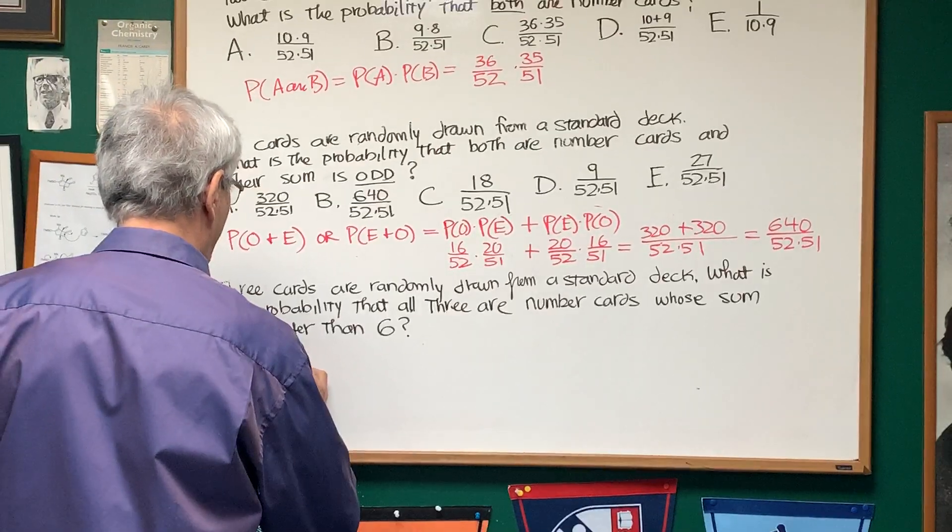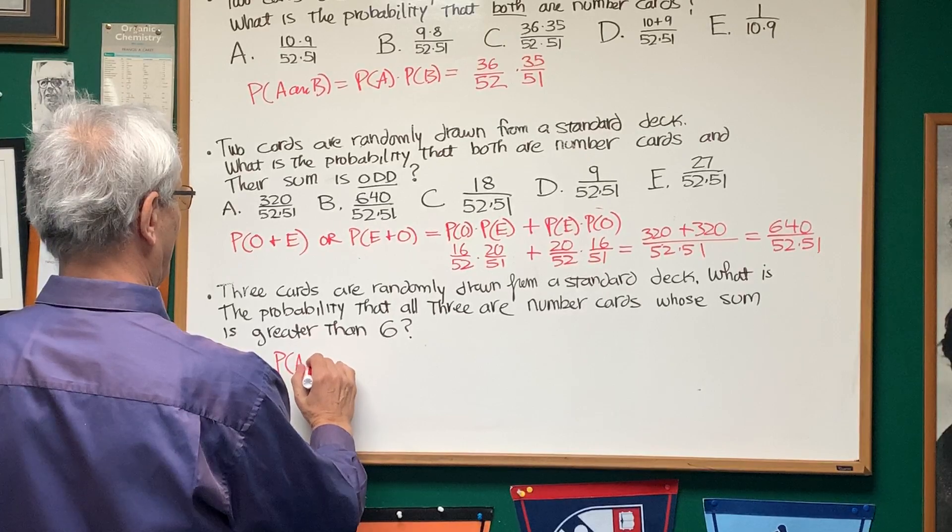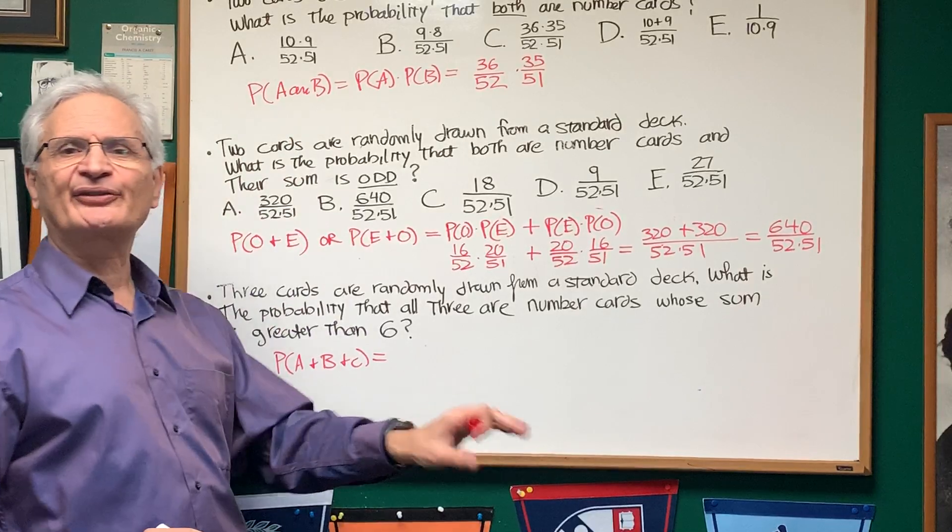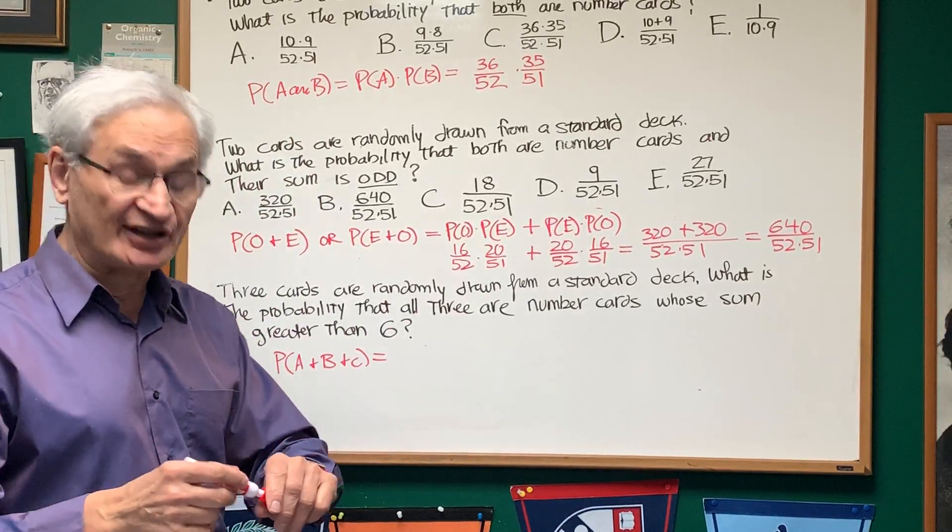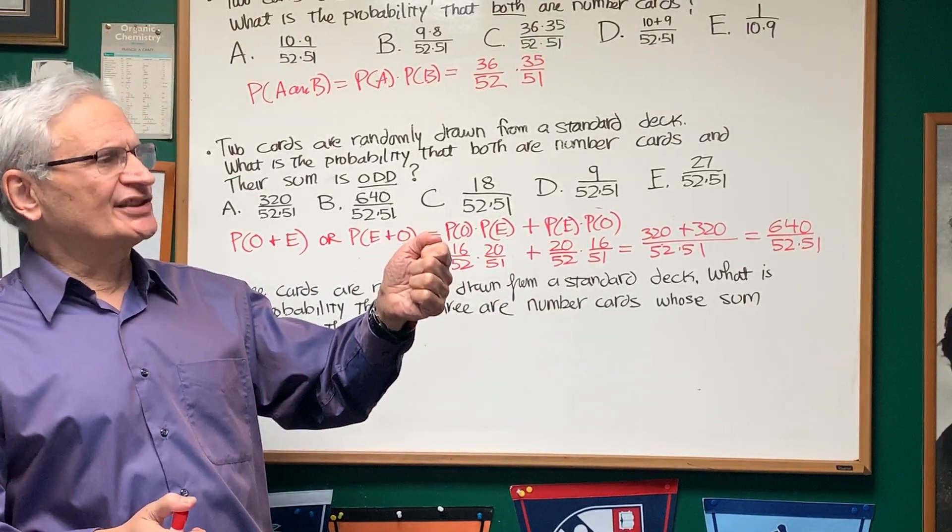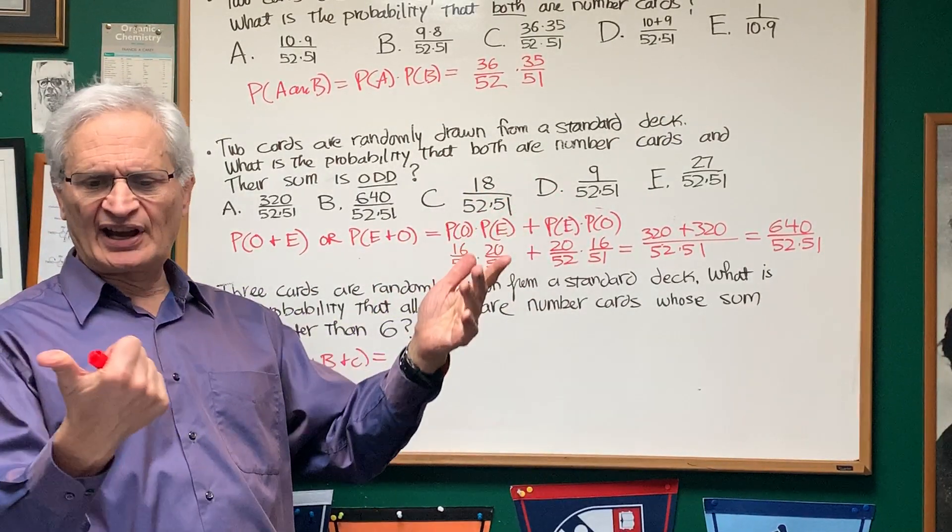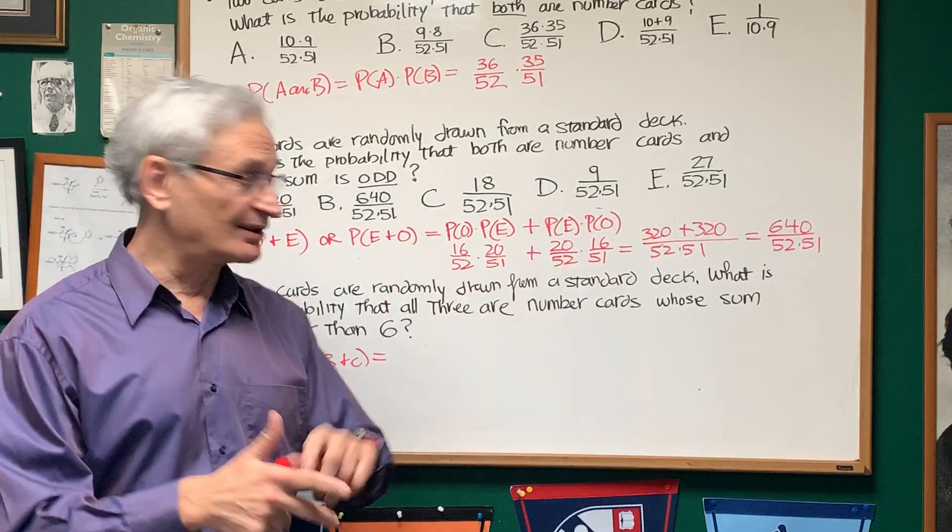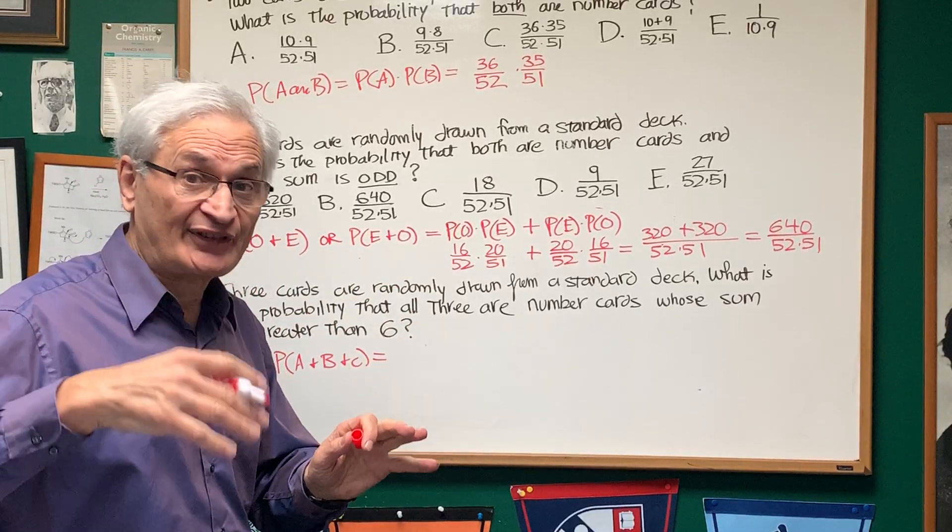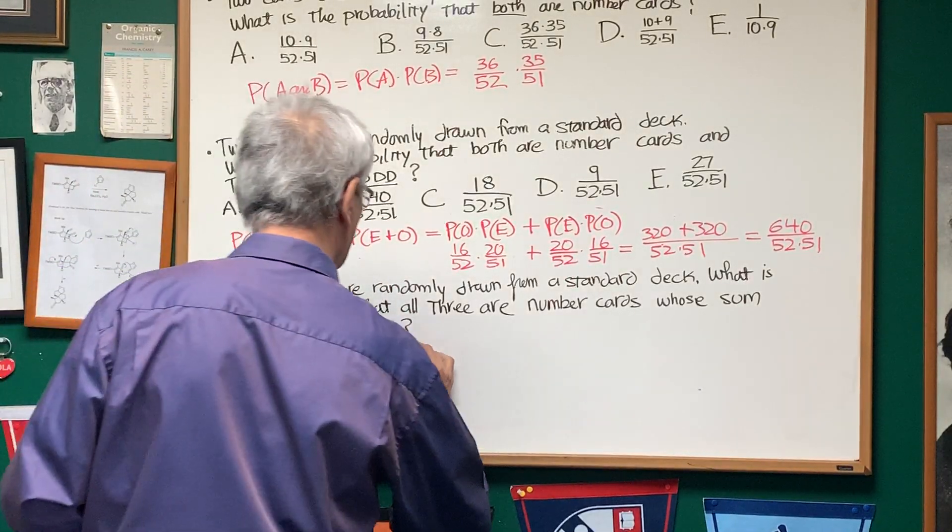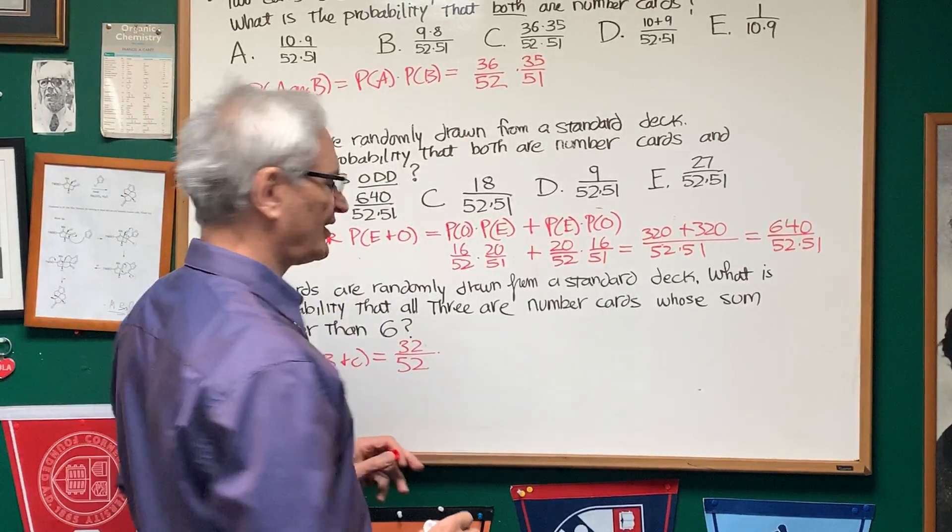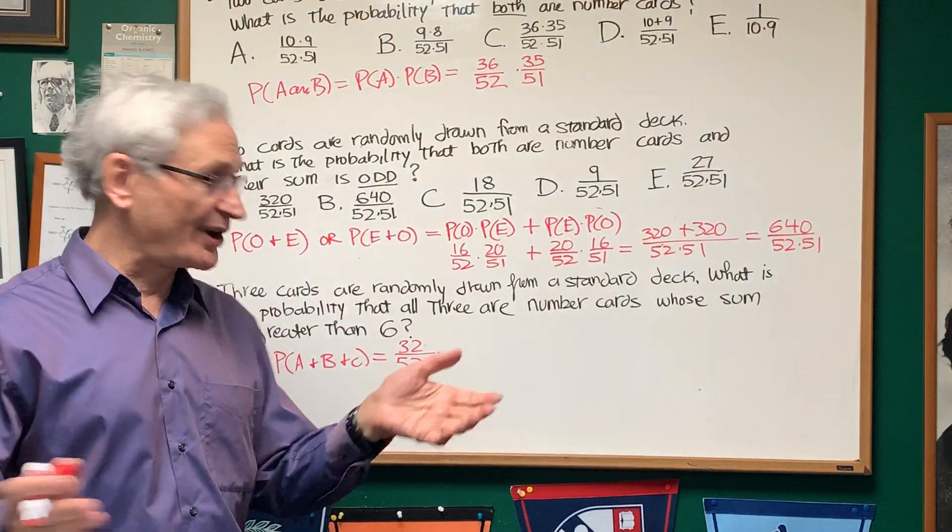So, we are looking for the probability of A and B and C. We are looking for the probability that the first card we pick out is going to be a number card that's greater than 2. How many number cards are there greater than 2? Let's see. 3, 4, 5, 6, 7, 8, 9, 10. There's 8. Okay. 8 out of... Then 8 per suit. So, we have 8 times 4. All together, we have 32 out of 52. 32 cards that are number cards that are greater than 2.